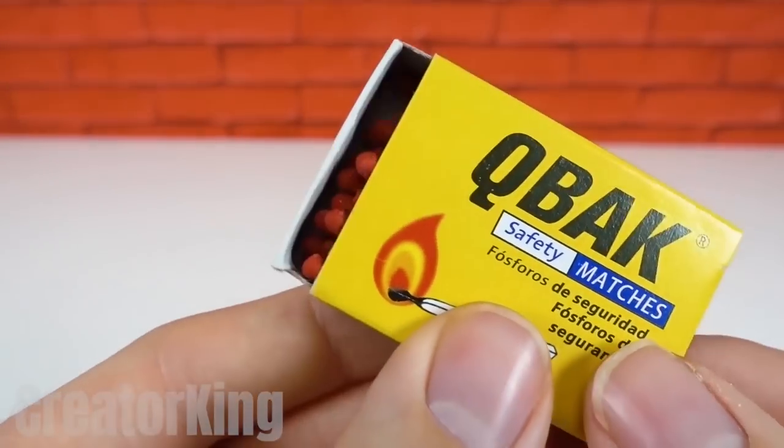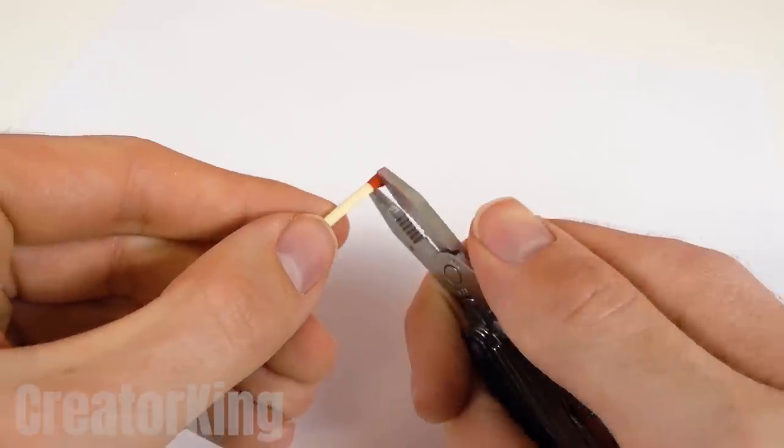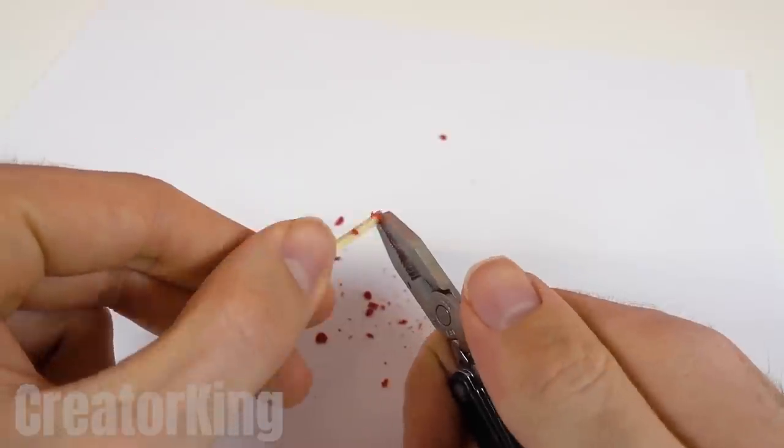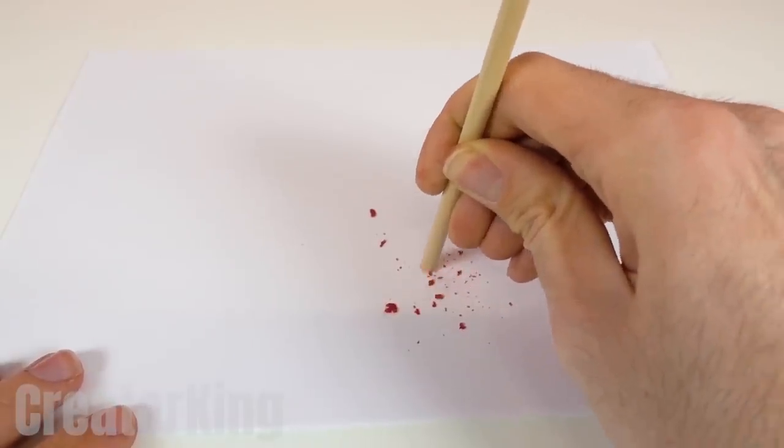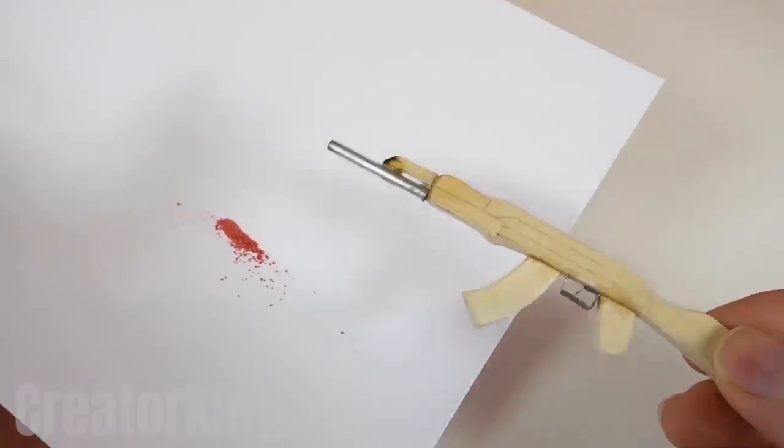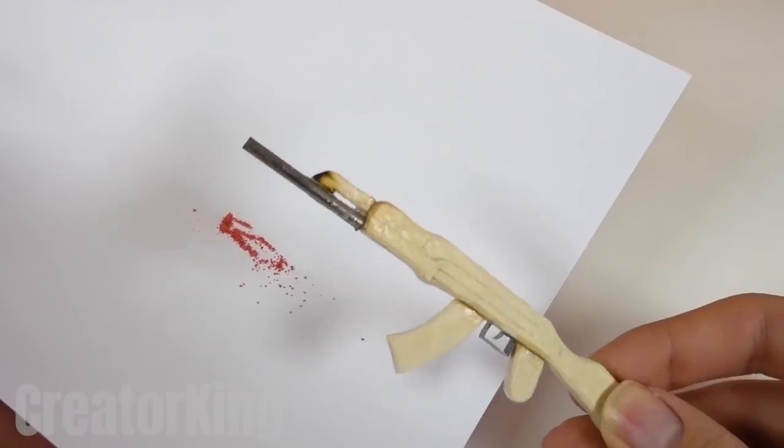It takes a couple of matches and with the help of pliers, we will chop off the magic powder that lights them. We need it to be as fine as possible, so with the help of a flat-headed object, grind the powder even more. Now put it inside the metal part of our launcher like you see on the screen.